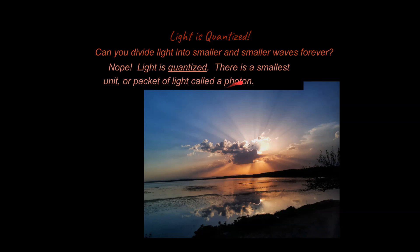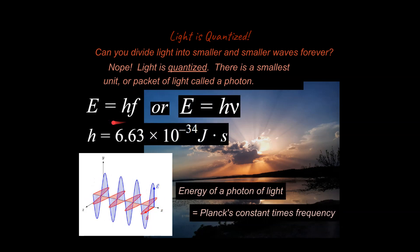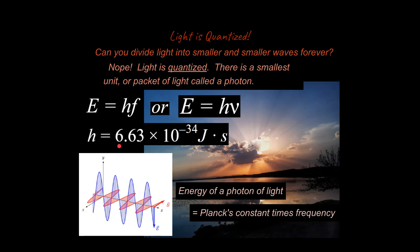Light is quantized, and so there is a smallest unit or packet of light called a photon. Now the energy of the photon depends on something called Planck's constant right here multiplied by the frequency. So this is the version of the equation I'm going to use. Historically, this is a version of the equation that was used. So you will see this in like university level physics classes sometimes.